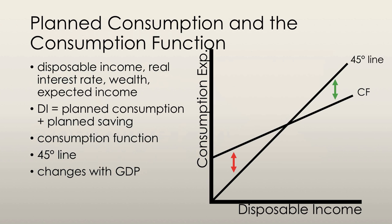When we talk about consumption, expenditure, and saving, we're going to say that planned consumption plus planned saving is equal to disposable income. We're assuming that people in the economy only do two things: they consume and they save. Whatever they don't consume, they save, and whatever they don't save, they're using to consume — they're buying stuff with it. And that's why we say that equals disposable income.